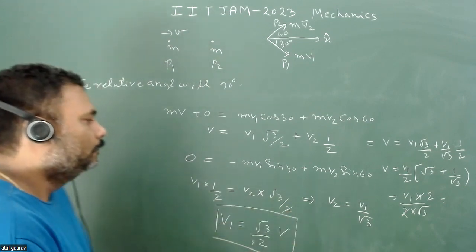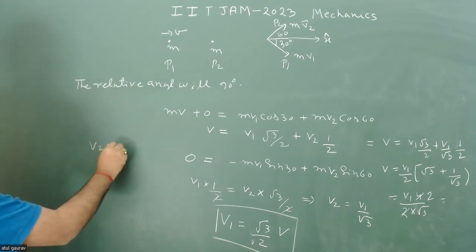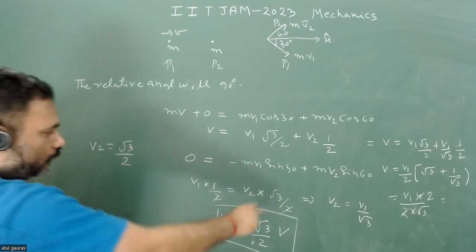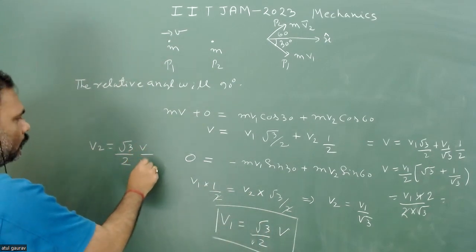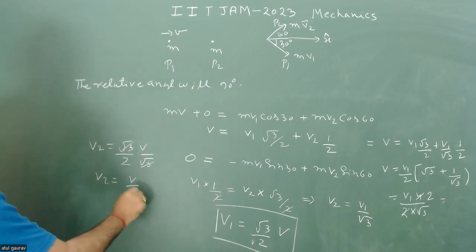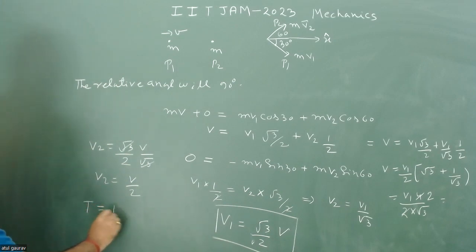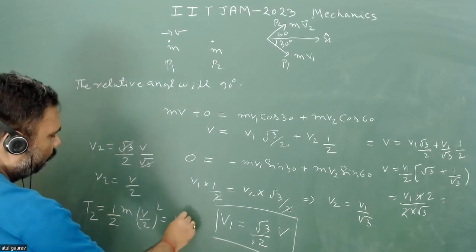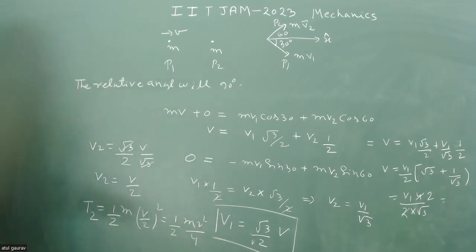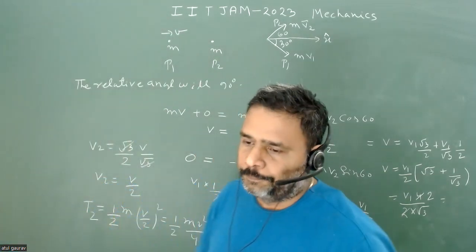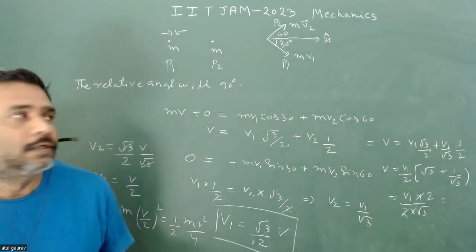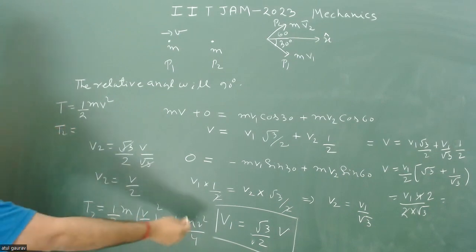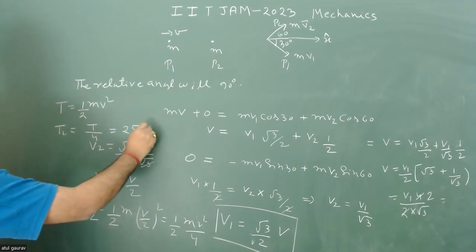Now that we have V₁, we can calculate V₂: V₂ = V₁/√3 = (√3/2)V / √3 = V/2. The kinetic energy of the second particle is (1/2)M(V/2)² = (1/2)M·V²/4 = MV²/8. The total kinetic energy is (1/2)MV² and is conserved since the collision is elastic. So the kinetic energy of P2 is T/4, which is 25% of the total.